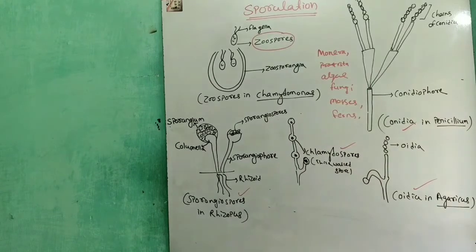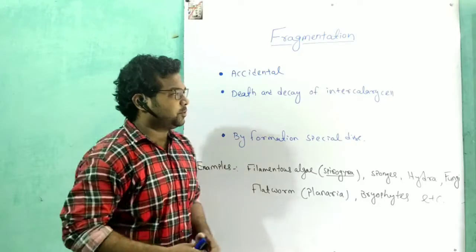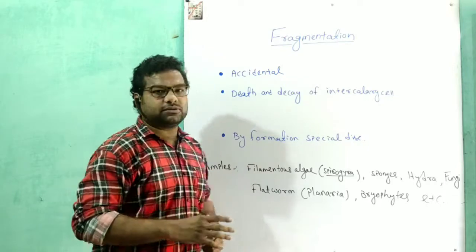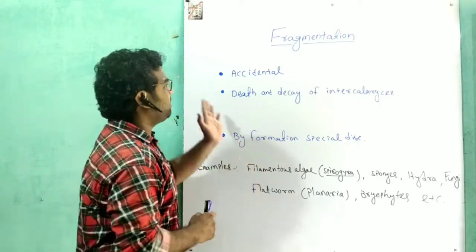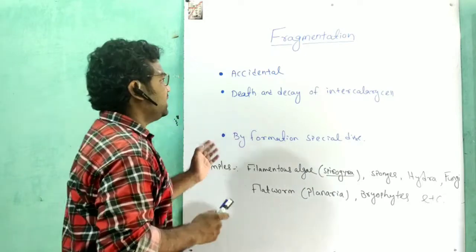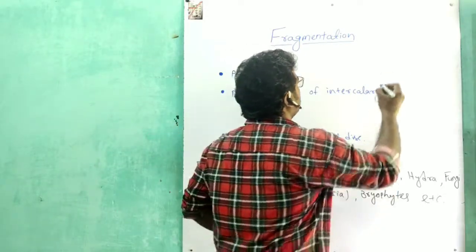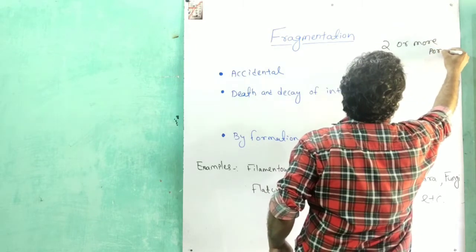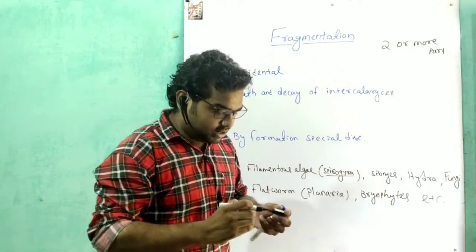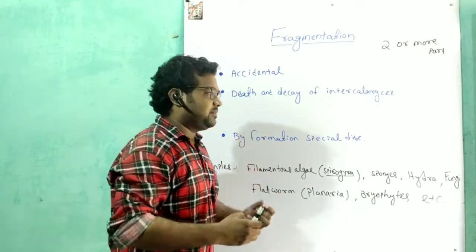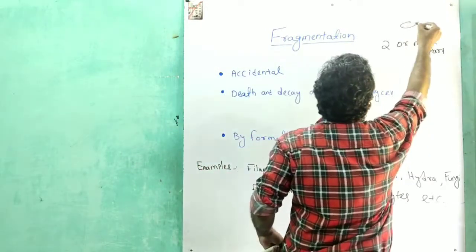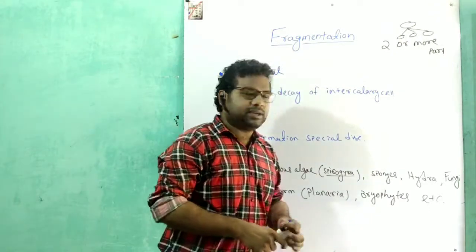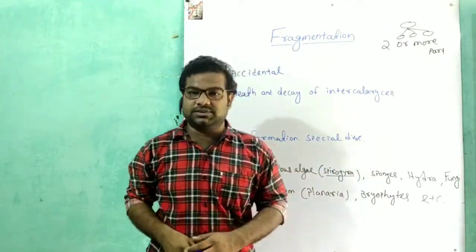The next part is fragmentation. Fragmentation is the breaking of an organism into two or more parts, and each part can grow into a new individual. The fragmentation can be accidental or organized, and the organism is divided into two or more parts, each of which develops independently.